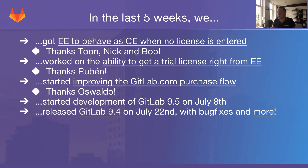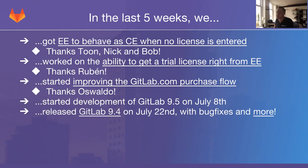We also started development of GitLab 9.5 on July 8th — 9.5 being the next release going out on August 22nd — and we released GitLab 9.4 on July 22nd. Since we have been working hard in the background on GitLab.com plans and EE functioning as CE when no license is entered, we were a little short on resources for platform back-end feature work. So in 9.4, our team mostly contributed bug fixes and minor performance improvements. Of course, the other teams — platform front-end, discussion, CI, etc. — have been working hard on features every month.